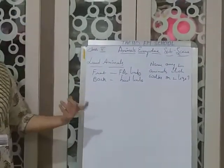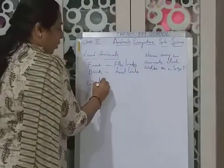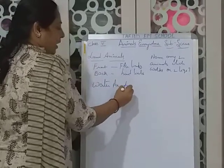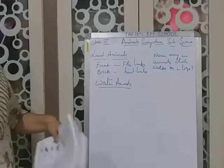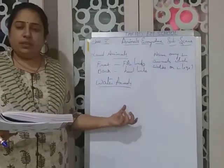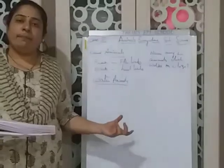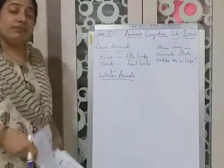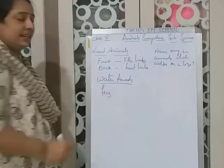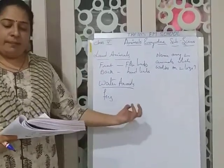Next, coming to the topic of water animals. What are water animals? The main water animal you know is fish. How does it swim? It swims with fins. Fish have fins for swimming.